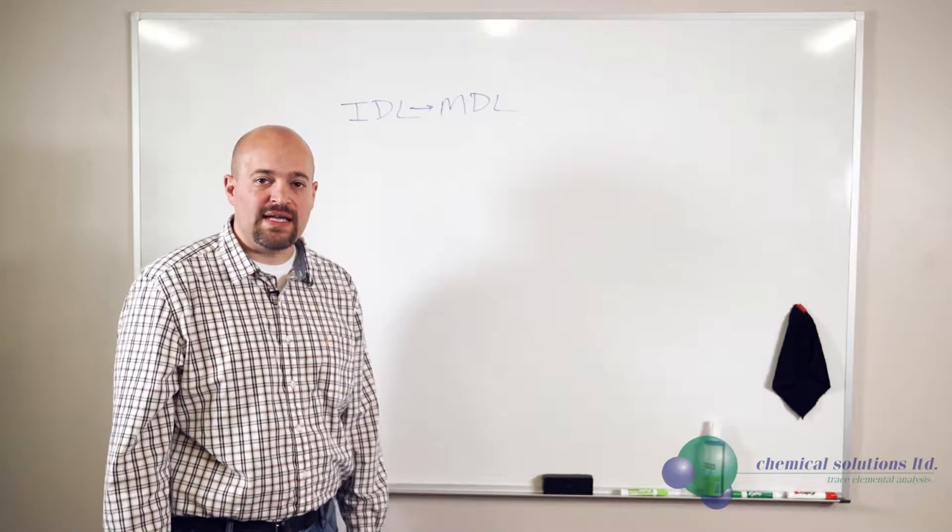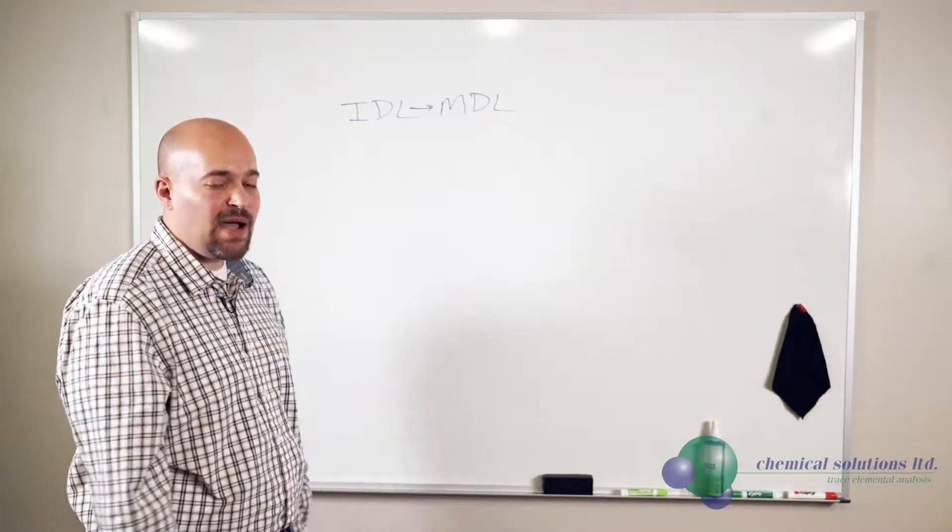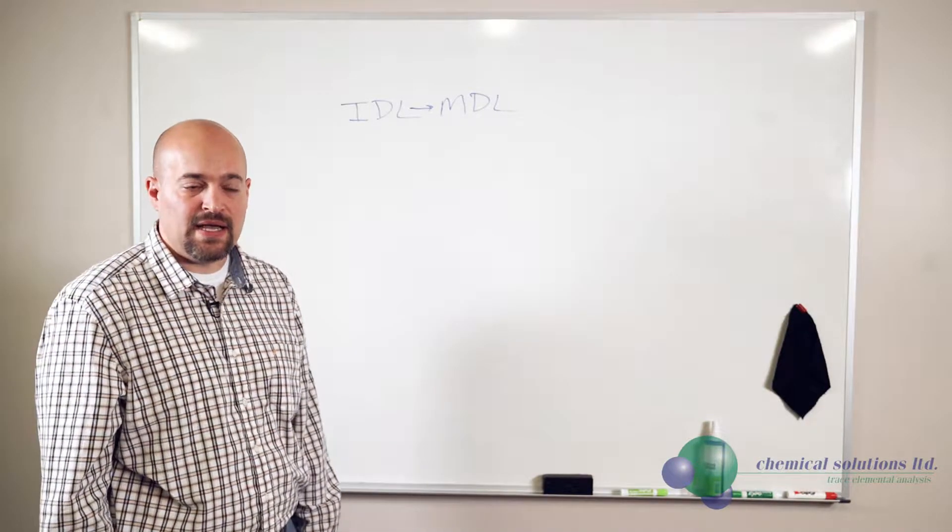One way that we calculate MDLs here at Chemical Solutions is by the equation of three times the standard deviation of seven readings of the lowest calibration standard. That's a common way for us to calculate an MDL.